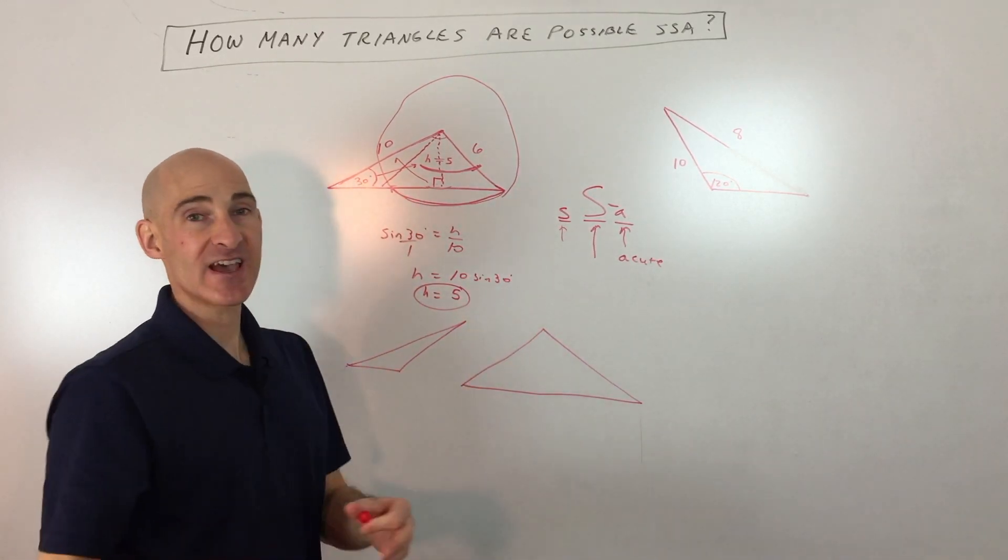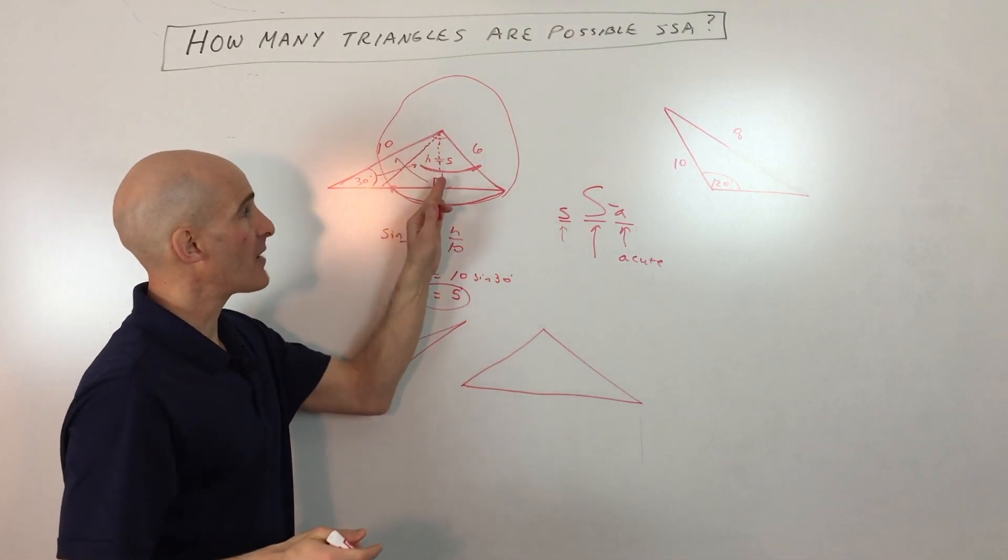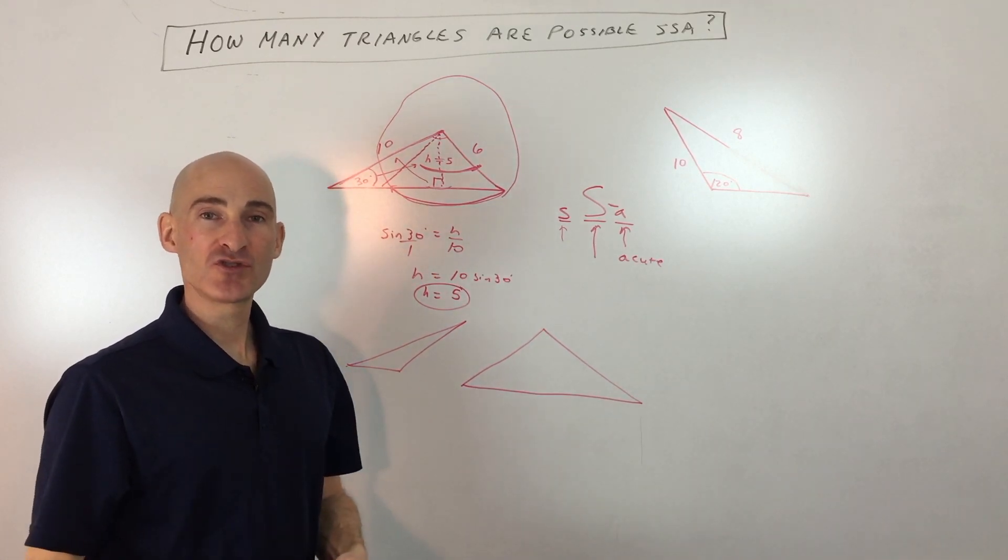So when you have that setup, you know there's a potential for two triangles. Not guaranteed—you have to check it by dropping that altitude. I hope you enjoyed this video.